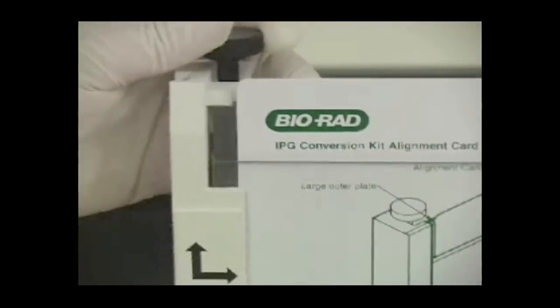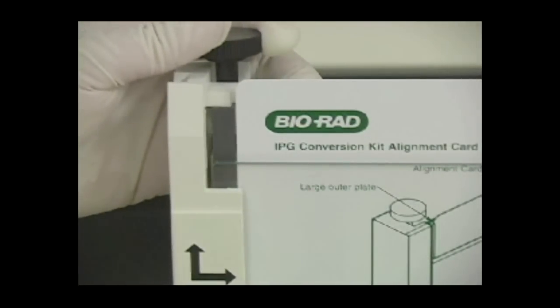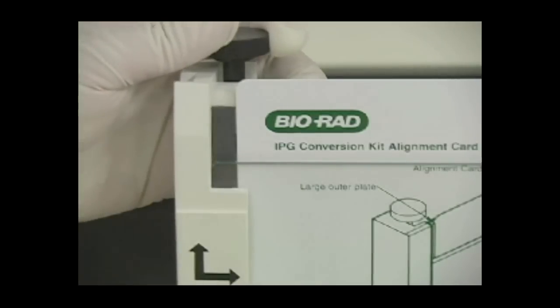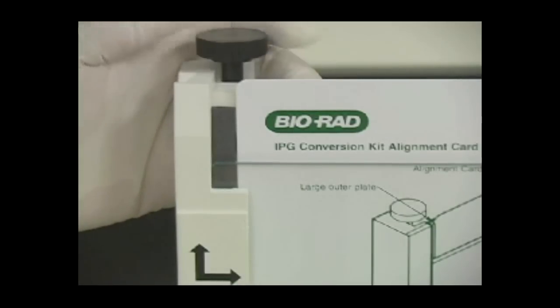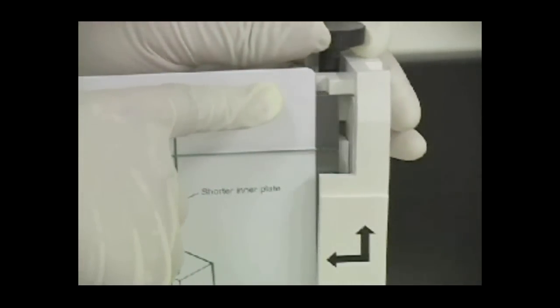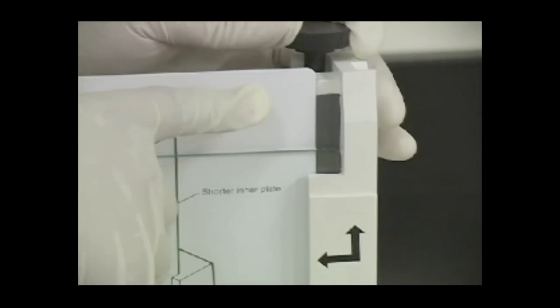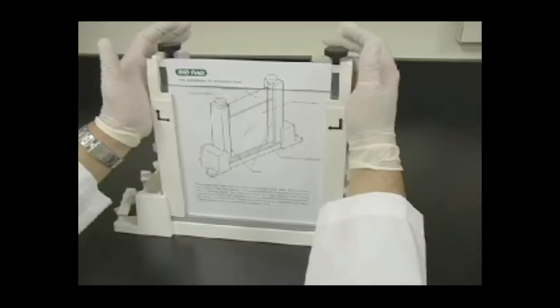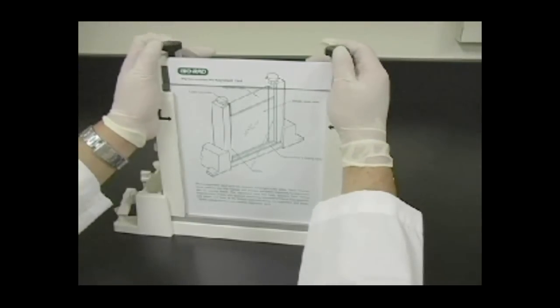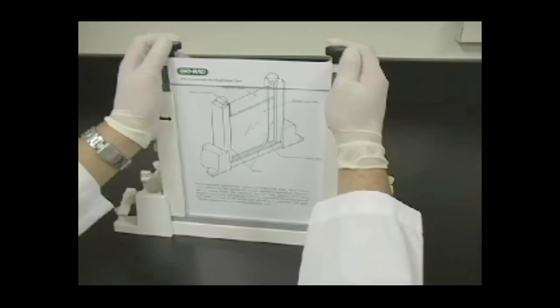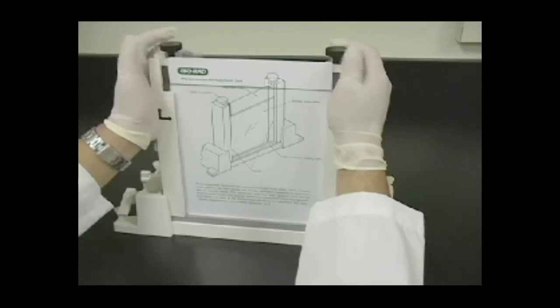Slightly loosen the clamp screws to check that the spacers are flush up against the top notches on the clamps. Simultaneously push inward on both clamps at the area around the arrows and tighten both clamp screws just enough to hold the sandwich in place. Pushing inward on both clamps at a point below the arrows will ensure that the spacers and glass plates are flush against the sides of the clamps.